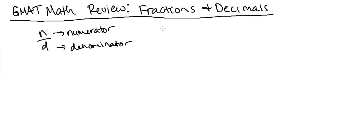So if I give you the fraction one third, you would say that the top number, which is one, is called the numerator, and the bottom number, three, is called the denominator.